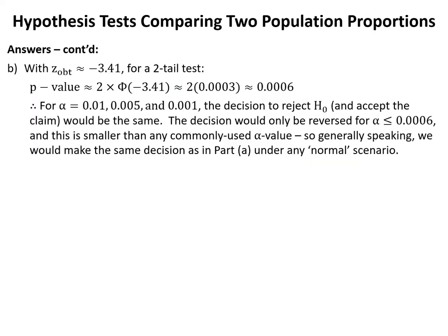In Part B, with Z obtained equal to minus 3.41 for a two-tail test, the p-value equals two times phi of minus 3.41, which equals two times 0.0003, giving us 0.0006. Therefore, for alpha values of 0.001, 0.005, and 0.01, the decision to reject H0 and accept the claim would be the same. The decision would only be reversed for alpha values less than or equal to 0.0006 — smaller than any commonly used alpha value — so we would make the same decision as in Part A under any normal scenario.